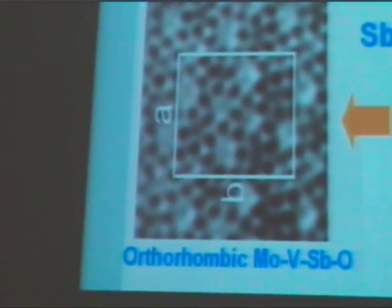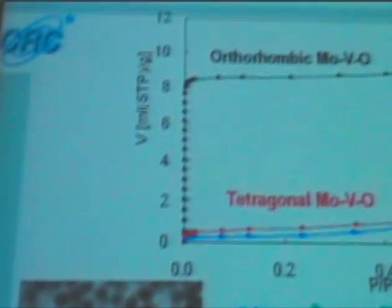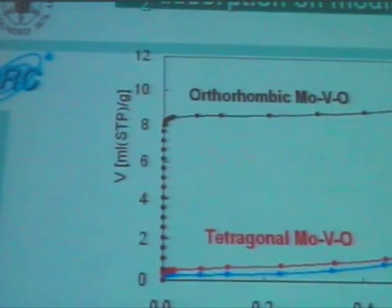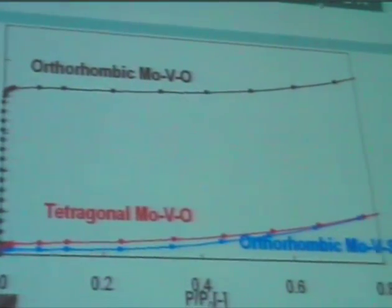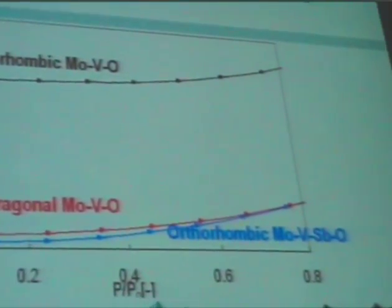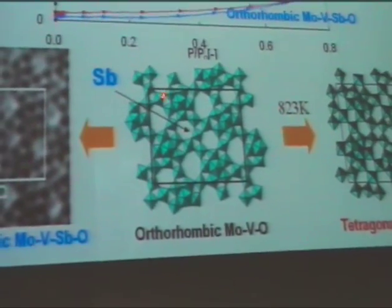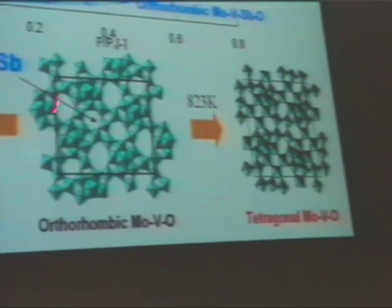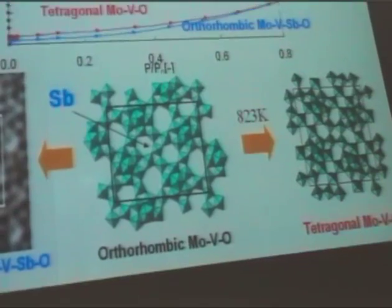This material can be modified a little — you can also introduce antimony into this part. Then you can get this solid. Of course, the antimony atoms ultimately occupy the empty sites inside, and then you don't expect any adsorption.